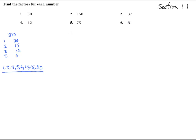Let's try the next one, number 2: 150. So it's going to be 1 and 150, 2 goes into it 75 times, 3 goes into 150 — 50 times. 4 doesn't quite do it, 5 will go into it.